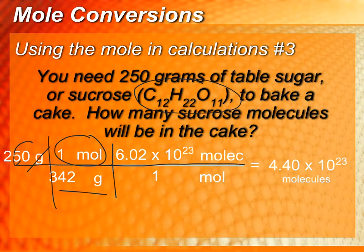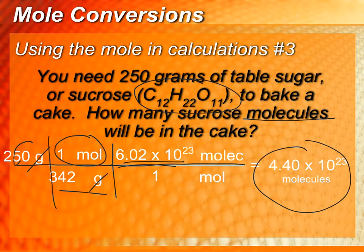Notice these grams are canceling out, and then on the top here we're in moles, but that's not what we're looking for. We're actually looking for how many molecules are there. So in order to go from moles to molecules, you need to use Avogadro's number. So you're going to just take your value here, multiply it by 6.02, and you're going to come out with 4.40 times 10 to the 23rd molecules.